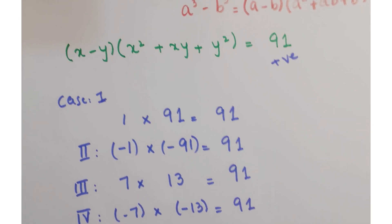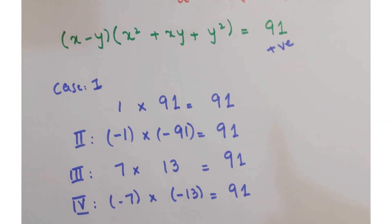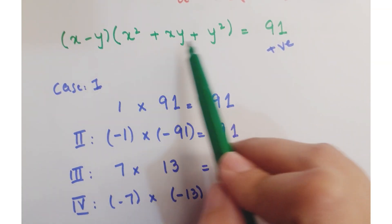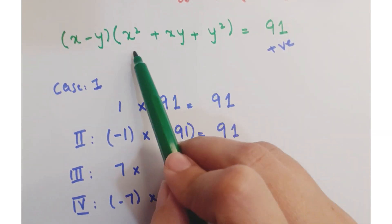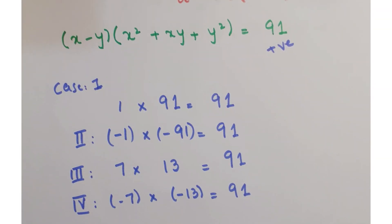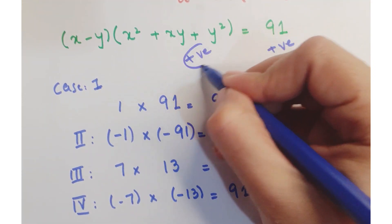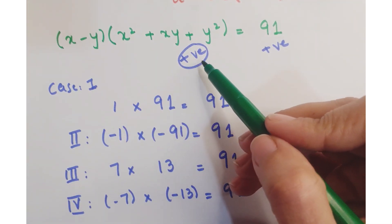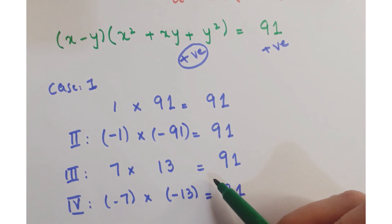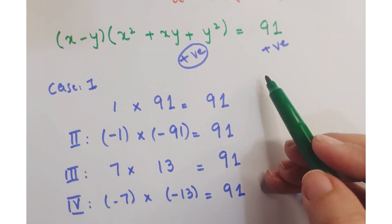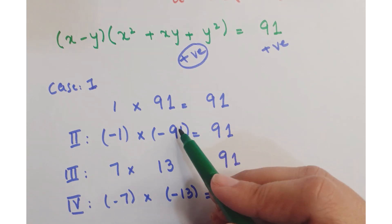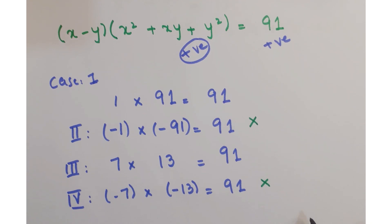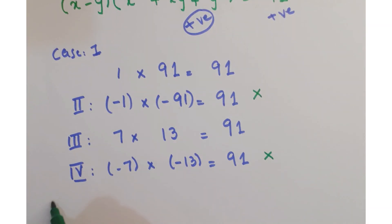Discussing these four cases, look at the second parenthesis — it contains x squared and y squared, so it is a sum of two squares, meaning it must be a positive value. It cannot be negative. So we reject the cases where the first factor is negative: cases 2 and 4 with minus 1 times minus 91 and minus 7 times minus 13 are rejected.